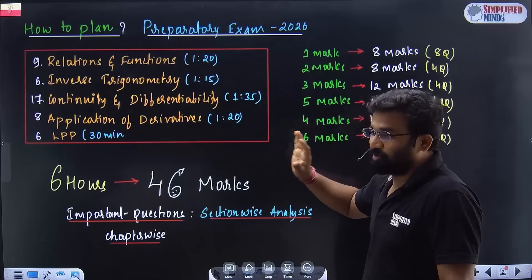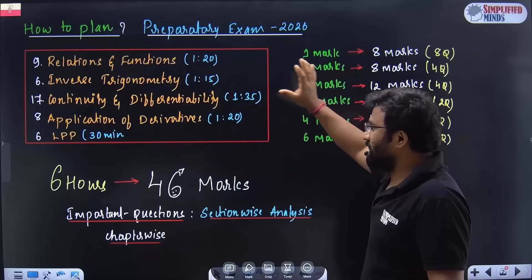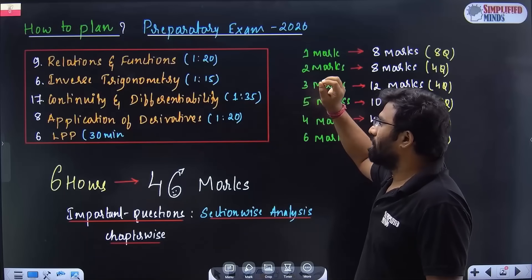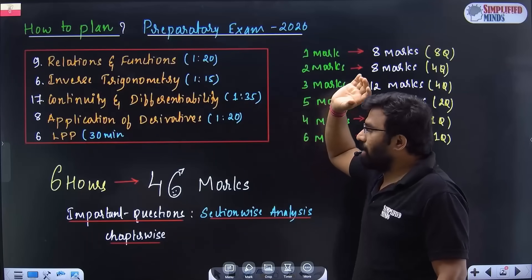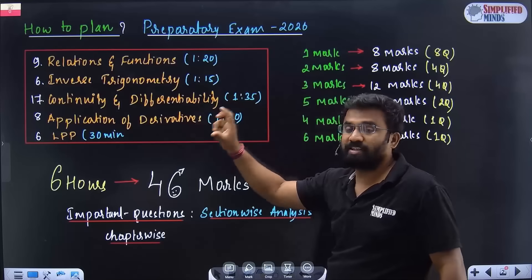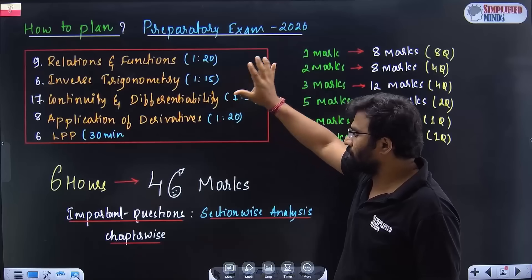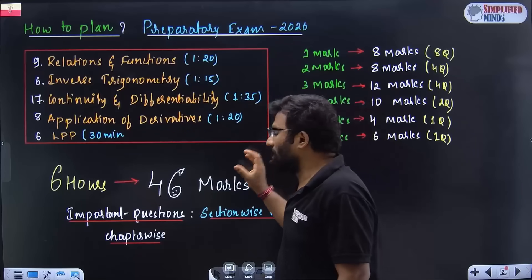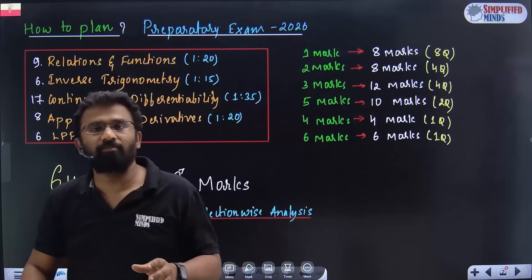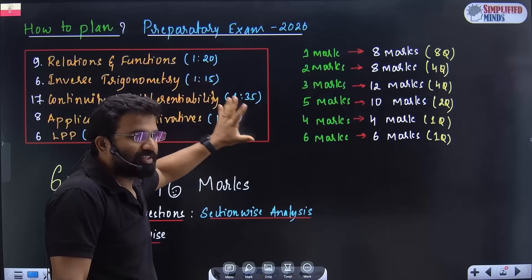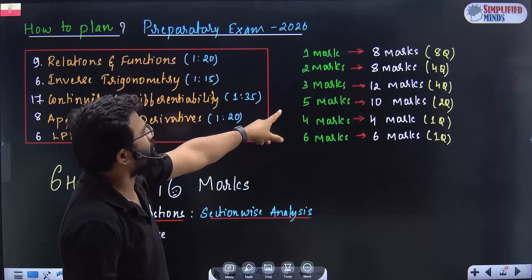I was shocked to see this actually. These chapters are here: Relations and Functions, ITF, Continuity and Differentiability, Application of Derivatives, and LPP. These chapters, especially these chapters, I'm going to choose. Just five chapters almost carry 46 marks. Why these chapters work? The very good thing about these chapters - it covers almost many questions.